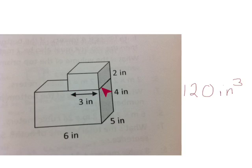So to find the volume of the top little box, we multiply 3 times 5 times 2. We know that 3 times 5 is 15 times 2 is 30, so the volume of the top little box is 30 cubic inches.